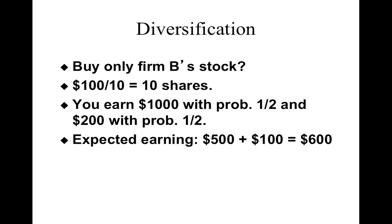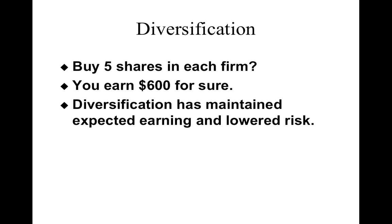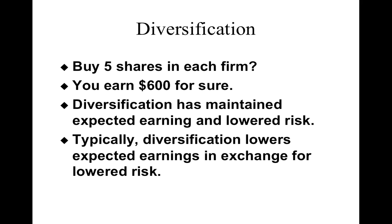What if you buy only firm B's stock? With one hundred dollars you again buy ten shares; the same gamble applies and the expected earning is again six hundred dollars. But what if you buy five shares in each firm? You can still expect six hundred dollars, but the risk is significantly lower — because one share doesn't go down when the other goes down, so your risk is evened out while you still get six hundred dollars.